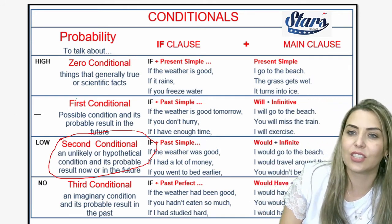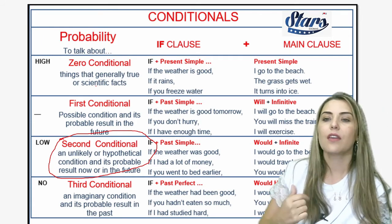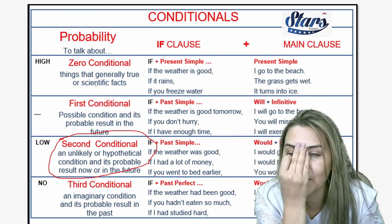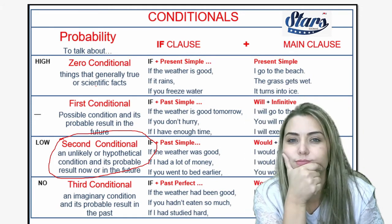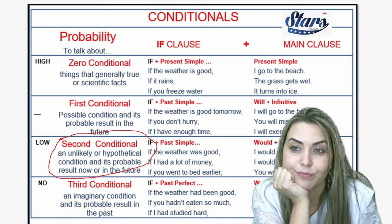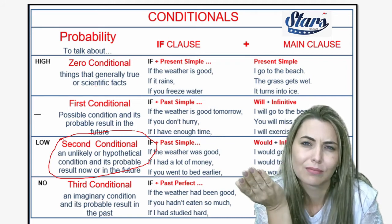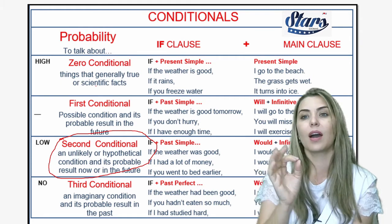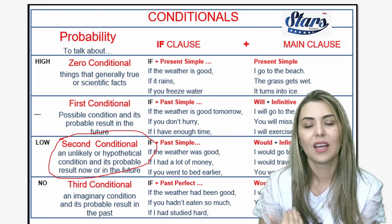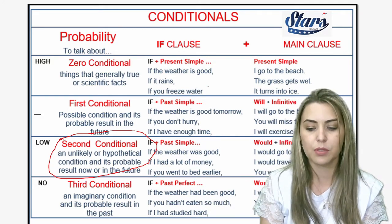The second conditional: if the weather was good, I would go. What is the chance the weather was good? I'm here today and I say: if the weather were good, I would go. What is the chance of me changing the weather? None — what happened in the past, happened. So the second conditional is almost impossible — nearly impossible.